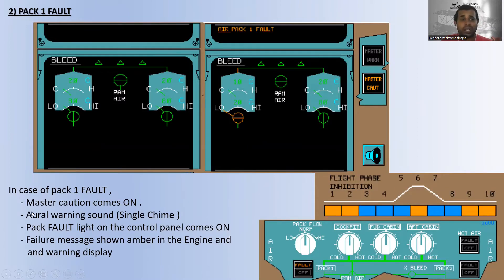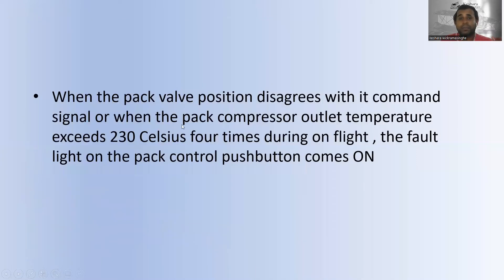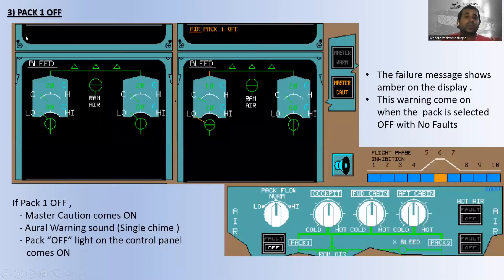In case of pack one fault, master caution comes on, oral warning sounds as a single chime, and the pack fault light on the control panel comes on. The failure message is shown in amber on the engine and warning display reading 'air conditioning pack one fault.' This occurs when the pack valve position disagrees with the command signal, or when the pack compressor outlet temperature exceeds 230°C four times during one flight.